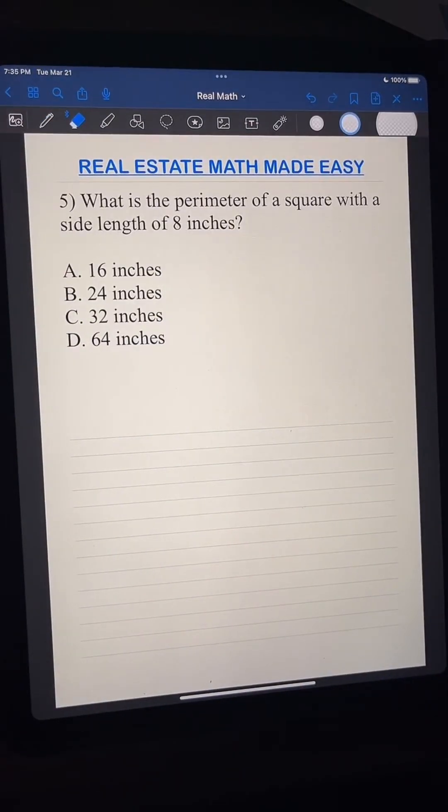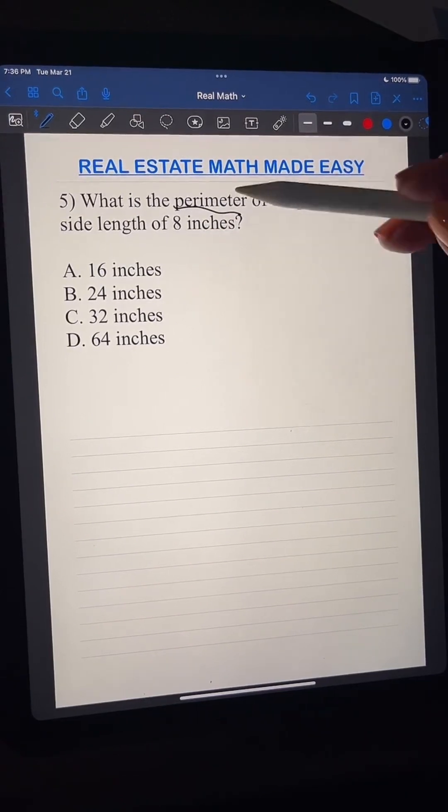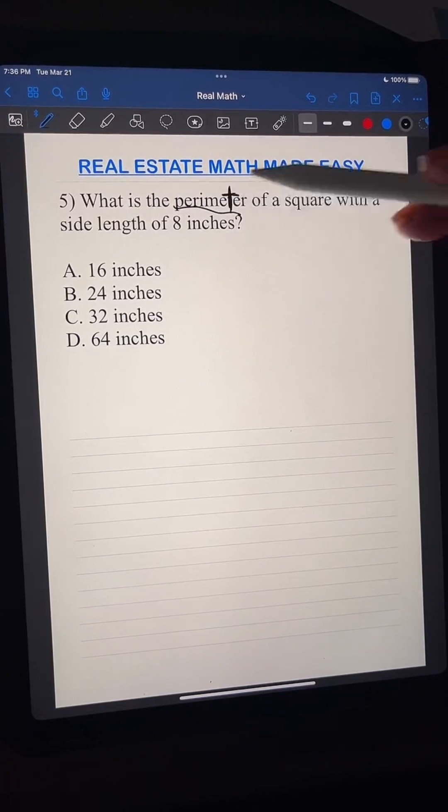Here we go. Here's the next question. Okay, so now we're talking about perimeter, okay? Perimeter is different than area. And we're going to add, we're always going to add when it says perimeter because we have this T here. T is like a plus sign, okay?